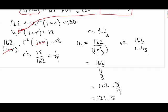This is the first term, or it could also be 162 over 2 thirds, which is 162 times 3 over 2, which now is simply 243.